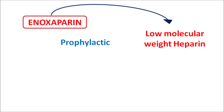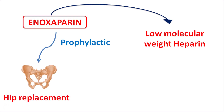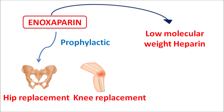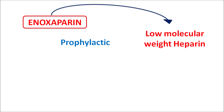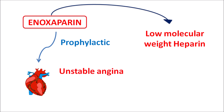Enoxaparin can also be used as a prophylactic in conditions associated with thrombotic events. It can be given prophylactically during surgeries such as hip replacement and knee replacement, which carry an increased risk of DVT and pulmonary embolism. Similarly, this drug can also be used prophylactically in cardiovascular disorders such as unstable angina and non-Q-wave myocardial infarction.